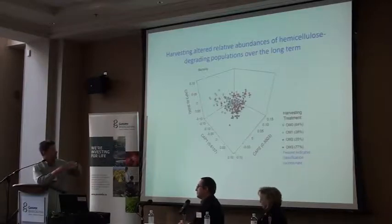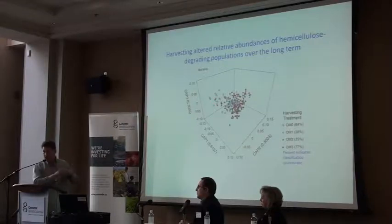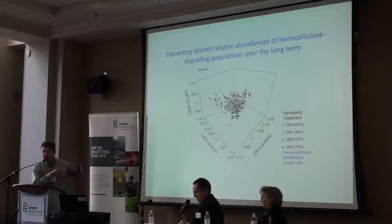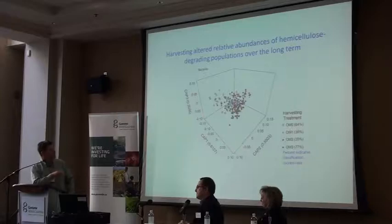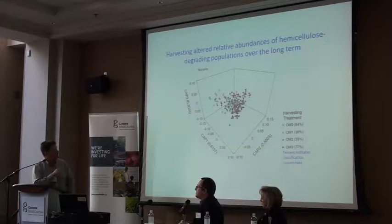We went back to look at the fate of those identified OTUs in the different harvesting treatments within the in situ pyrotag data set, and there we find a much stronger effect of the harvesting treatments. The ordination shows that the communities for different harvesting treatments are somewhat distinct but overlapping — not a total change. But the relative abundances of these hemicellulose degraders were affected by harvesting very significantly, and the most severe treatment, OM3, yielded the most distinct community, in line with what we might expect.